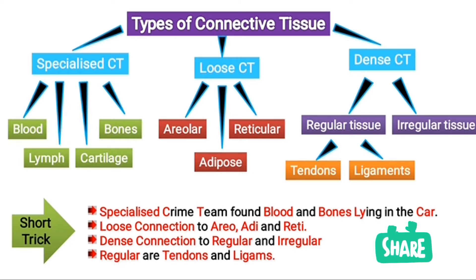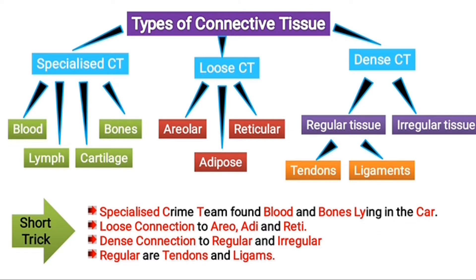Dense connective tissue consists of regular tissue and irregular tissue. Regular tissue is further divided into tendons and ligaments. So this is the overall flowchart of connective tissue. Now let's see the trick for remembering all of this.